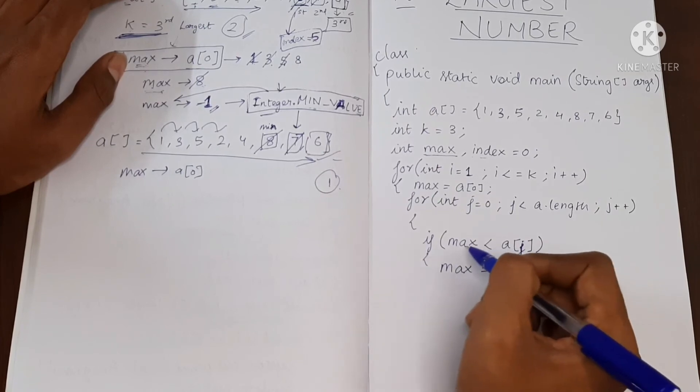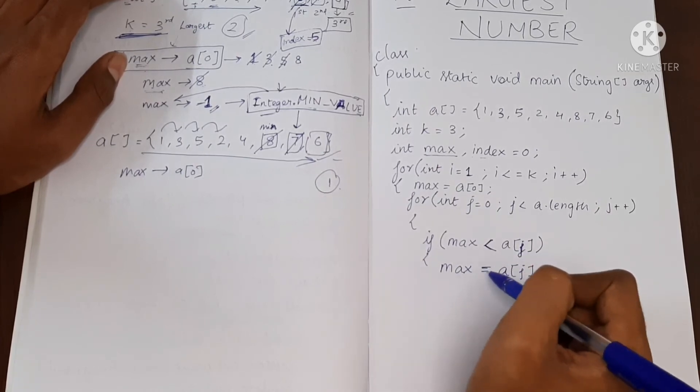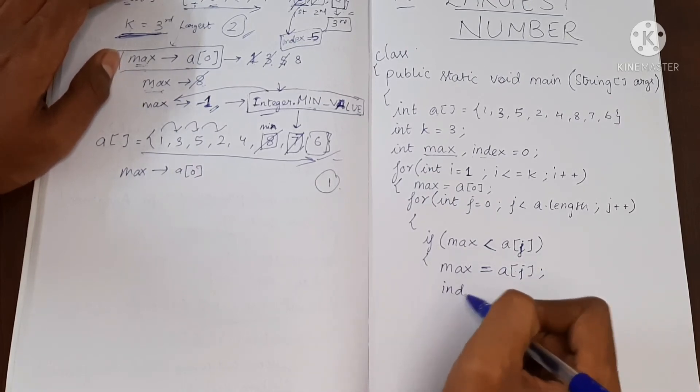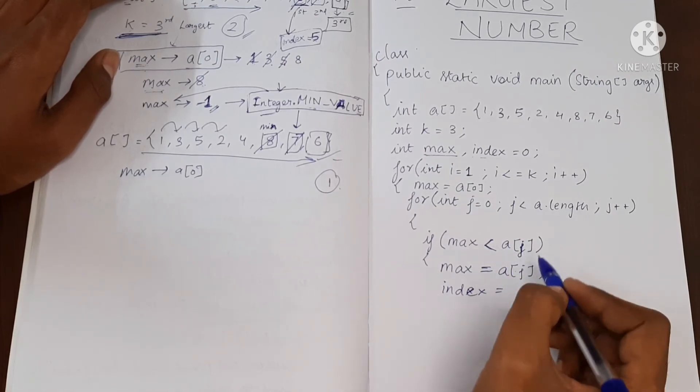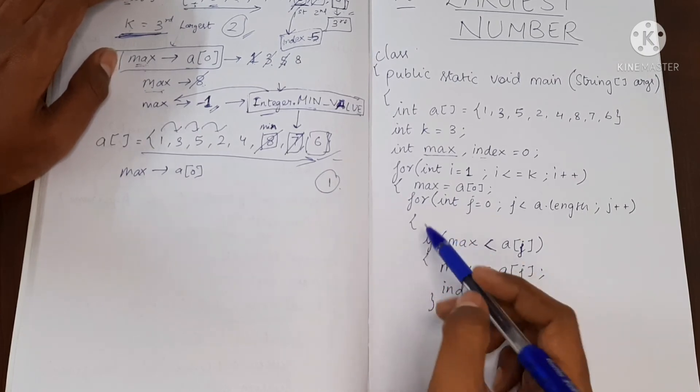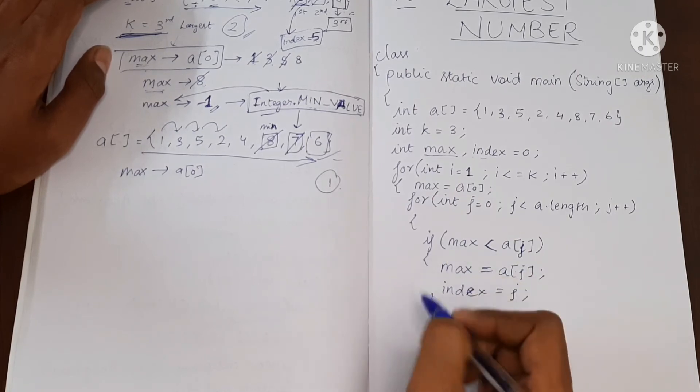Then we'll make max as a of j, since we found something greater than max. So we are going to put the greater value in max. It's done and we will store the index of where we found this max. Index will be j. So this is done. So here we'll find the maximum value and also where the maximum value is present.